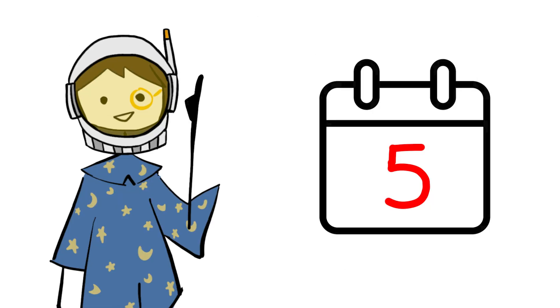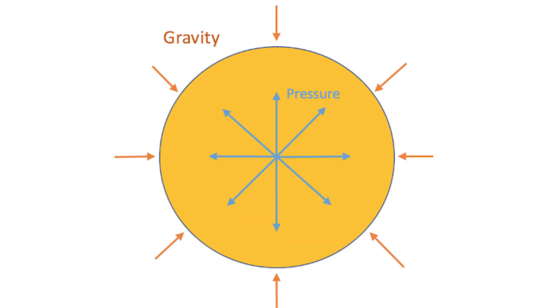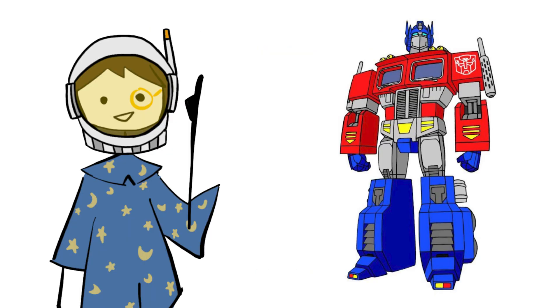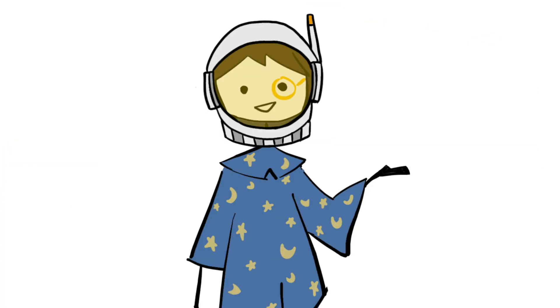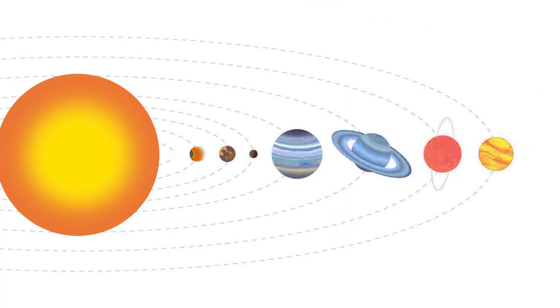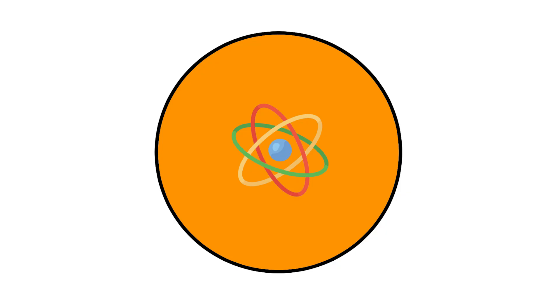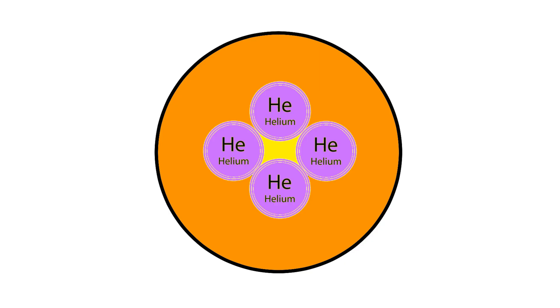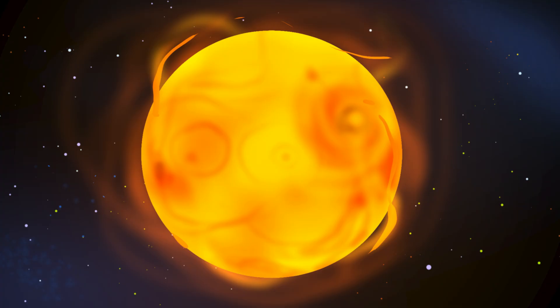In 5 billion years from now, the Sun exhausts the hydrogen fuel in its core. The central fusion reactor that has maintained stellar equilibrium for billions of years shuts down. This marks the transformation from main-sequence star to red giant, a transformation that will reshape the inner solar system. As the core collapses under its own gravity, temperatures rise. Hydrogen fusion ignites a shell surrounding the now-inert helium core. The energy released is enormous, far greater than during the main-sequence phase.